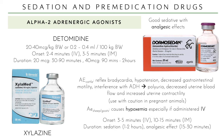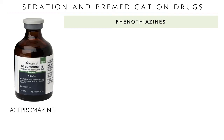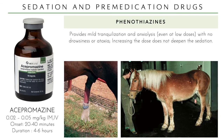Next are phenothiazines — still used in large and small animals. They are very good for tranquilization with a quite fast onset. Acepromazine is good to calm fractious or aggressive patients. However, if you increase the dose it will not deepen the sedation — so be careful, the range is just 0.02 to 0.05 mg/kg, not a big range.